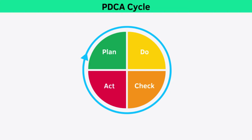The four stages are: Plan — decide what it is you're going to try and do and make a plan to do it. It's small, quick, incremental improvements you should aim to achieve, not large-scale projects. Do — execute your chosen plan on a small scale. For example, you might decide to update code on a test server.